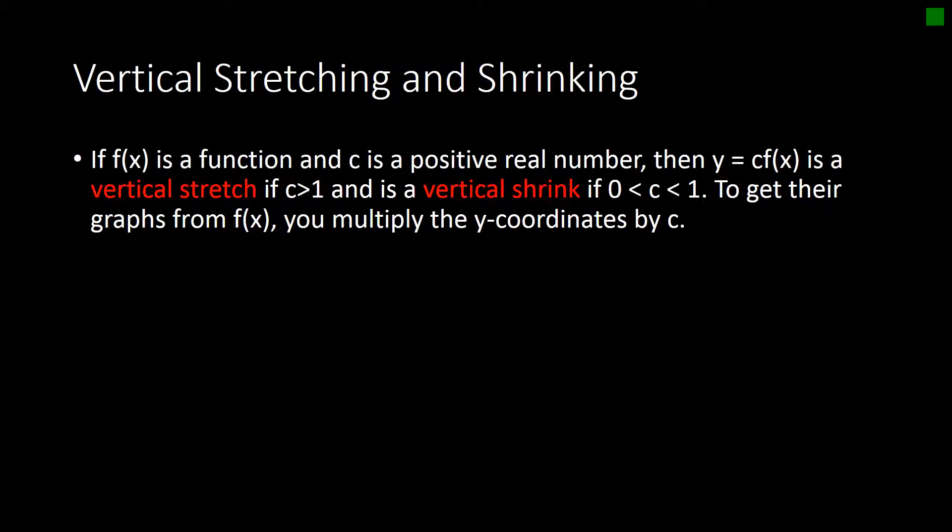So we can also vertically stretch and vertically shrink a graph. If f of x is a function and c is a positive real number, then y equals a constant times the function. Here the constant is on the outside of the function. It's a vertical stretch if c is bigger than 1 and it's a vertical shrink if c is between 0 and 1. So in order to get the graphs of something that's vertically stretched or vertically shrunk, you need to multiply the y-coordinates by whatever that c number is.